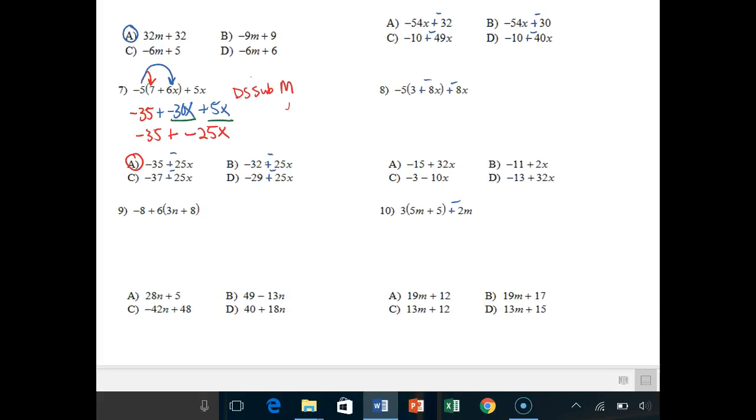Number 9. You always multiply the number that's next to the parentheses. So it's 6 times 3n and 6 times 8. You can bring your negative 8 down, that stays exactly the same, plus 6 times 3n is 18n. Don't forget your variables when you're multiplying. And 6 times 8 is 48.